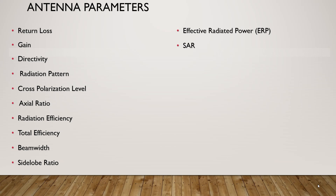An antenna radiation pattern is a graphical representation of the radiation properties of an antenna in its radiating far-field region. Cross-polarization level in antenna theory refers to the undesired polarization component that is orthogonal to the intended polarization of an antenna. It is typically expressed as a ratio of power in the undesired polarization to the power in the desired polarization. Axial ratio is a parameter used to describe the polarization of an antenna, particularly in circularly polarized antennas, defined as the ratio of the major axis to the minor axis of the polarization ellipse.